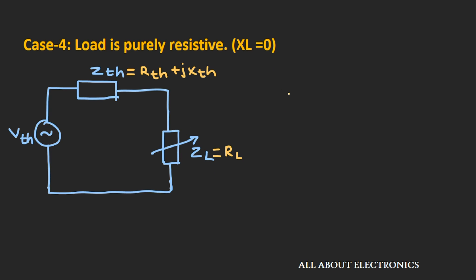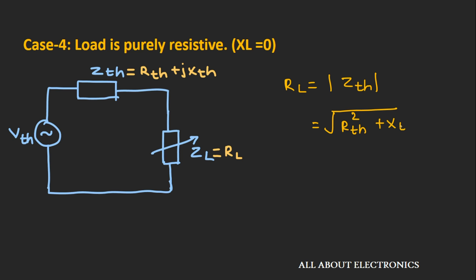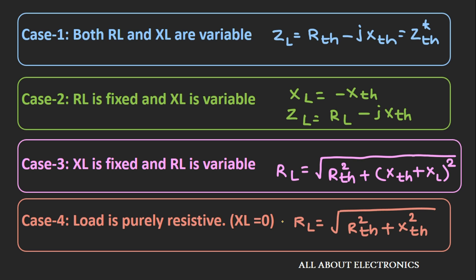In the fourth case, the load is purely resistive — the reactive part is totally zero. For maximum power transfer, the value of load resistance should equal the magnitude of the Thevenin's equivalent impedance, that is √(Rth² + Xth²). This is the summary of the four different cases and the value of load impedance which gives maximum power across the load.